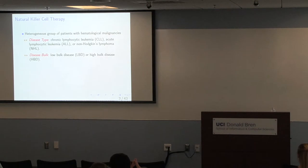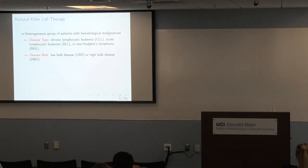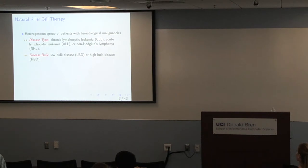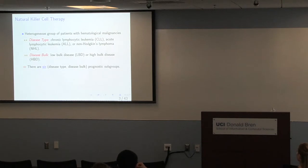A little more specific about our trial setting: we have heterogeneous groups. There are two identified important prognostic factors — disease type and disease bulk. For disease type, we have three different types: CLL, ALL, and NHL. For disease bulk, we have low bulk disease and high bulk disease. High bulk disease is known to be associated with a high chance of side effects. So we have three different disease types times two bulk categories, giving six different prognostic subgroups defined by these two factors.